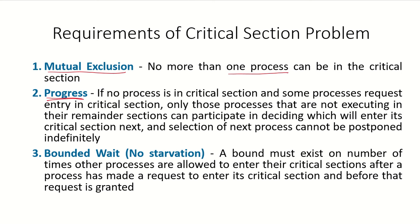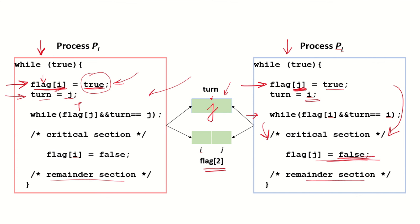The second requirement is progress: if no process is in the critical section and some processes request entry, only those not executing in their remainder section can participate in deciding which will enter next, and this selection cannot be postponed indefinitely. In Peterson's solution, when both processes wished to enter, neither was in the remainder section, and both collectively and promptly decided which process would enter the critical section. This decision was not prolonged indefinitely.